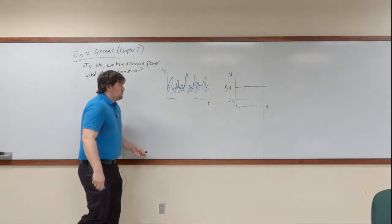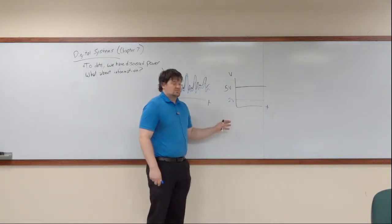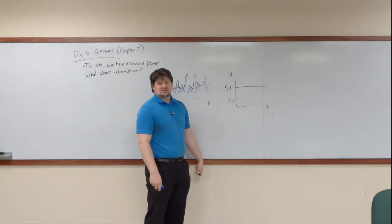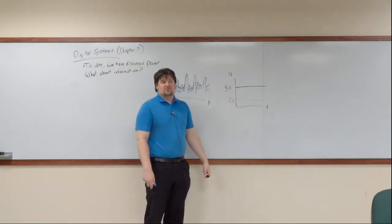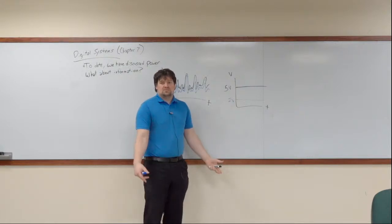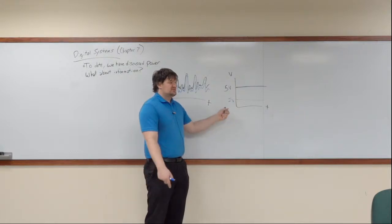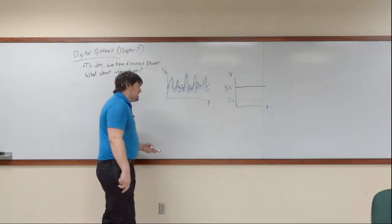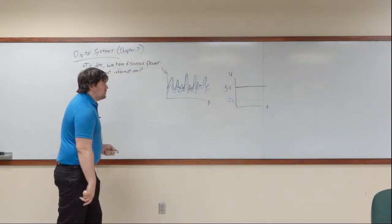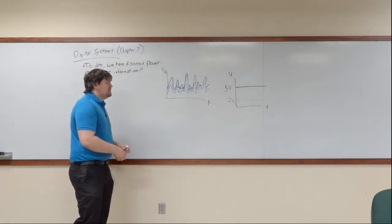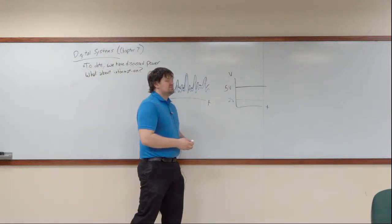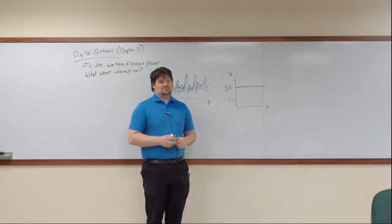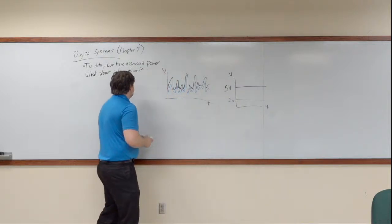So we run into this problem: Zane receives 2 volts, I send 5 volts — it's not the same, he reads a very different message. To combat this, what we have to do is we need a signal that is magnitude independent.